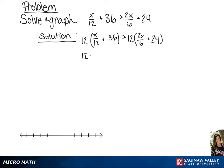Now we're going to distribute the 12 throughout the parentheses on both sides of the inequality. This gives us x plus 432 is greater than 4x plus 288.